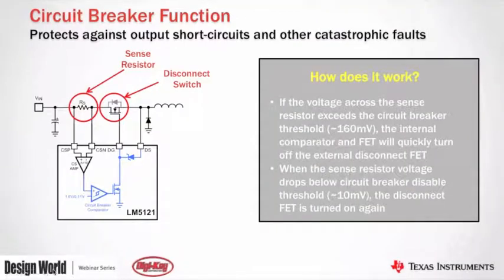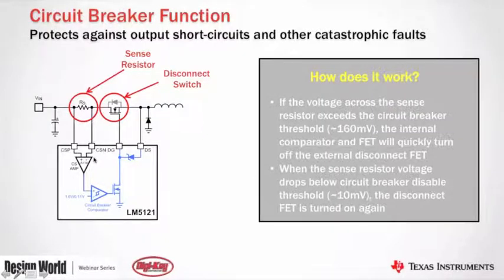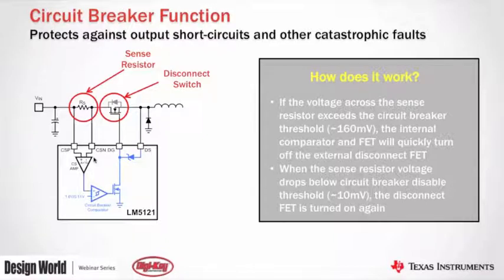The circuit breaker protection works automatically by sensing current across the sense resistor. When the voltage across those two nodes exceeds the 160 mV threshold, the comparator turns off the disconnect FET and removes the load from the source. When the voltage drops below the disable threshold, the FET turns back on with a soft start restart. If the fault persists, it disconnects again. The user can also program it to stay off rather than continue attempting to restart.